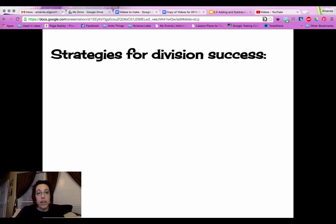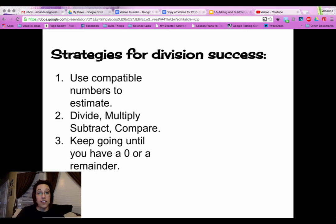So again, reminding you of our strategies for division success tonight. Use compatible numbers to help you estimate. You're going to divide, multiply, subtract, and compare. And then keep going until you have a zero or a remainder.